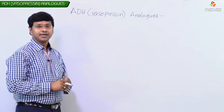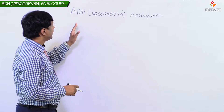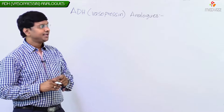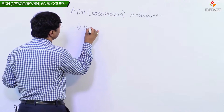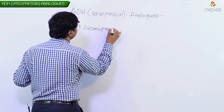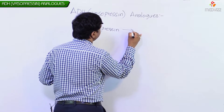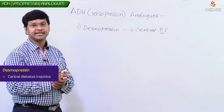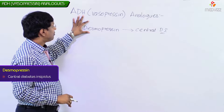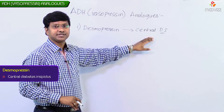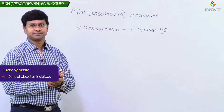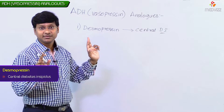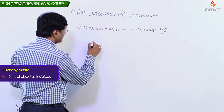Next we will discuss about the ADH or vasopressin analogues which are used in the treatment of various clinical disorders. Take one of the vasopressin analogues, that is Desmopressin. Desmopressin is the drug given in patients with central diabetes insipidus. The point is, why are we using Desmopressin in the treatment of central diabetes insipidus? Why not vasopressin as such? We are not using vasopressin because of several disadvantages.